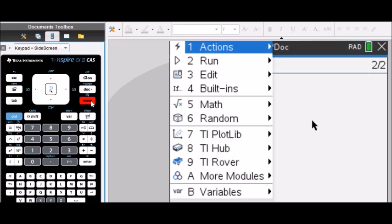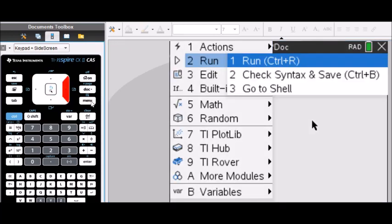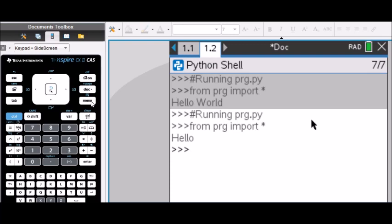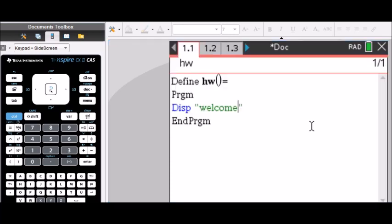So here, how do you run a program? You press menu, go to run, Ctrl-R, and you can see the output, hello, instead of hello world. Notice it uses tab 1.1 and tab 1.2. And that's how you can just jump back and forth between your two programs. Well, that was Python.